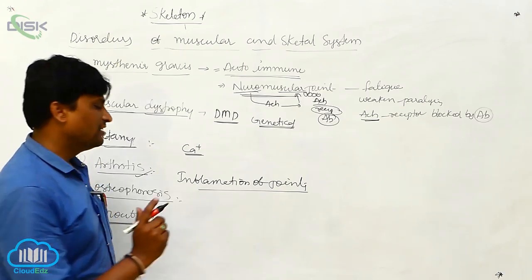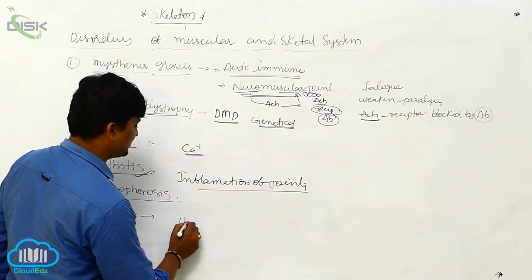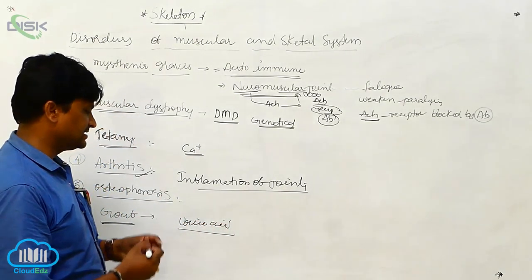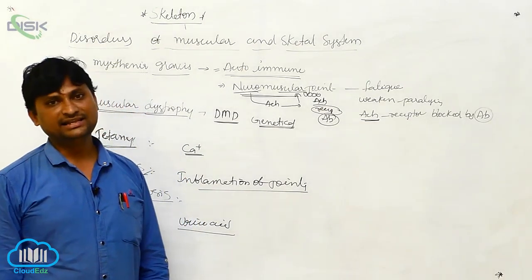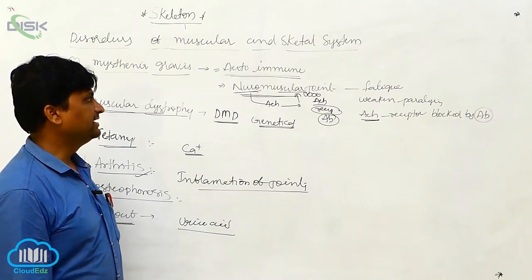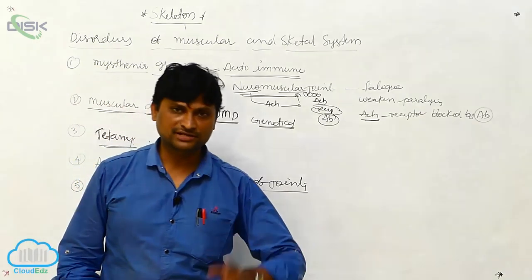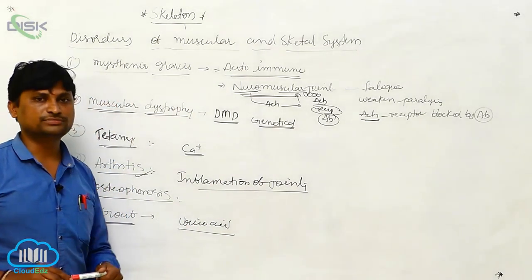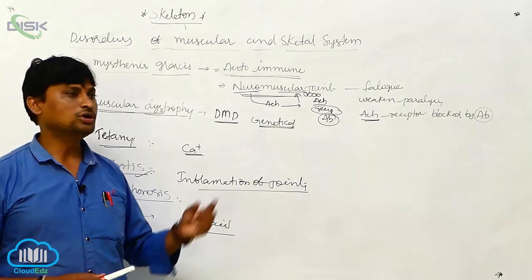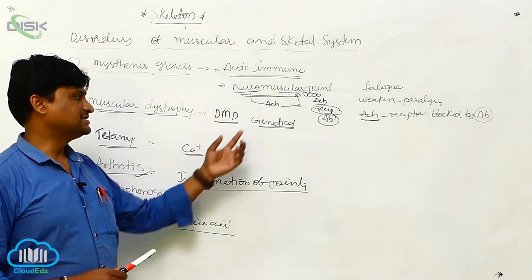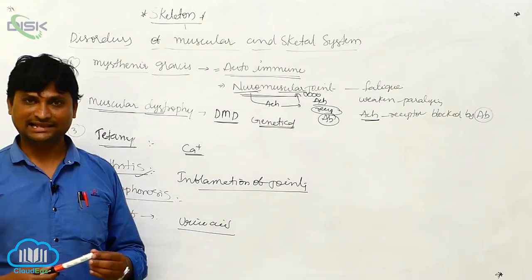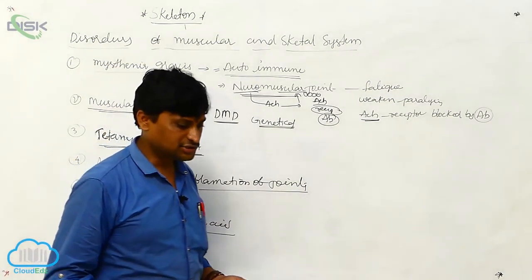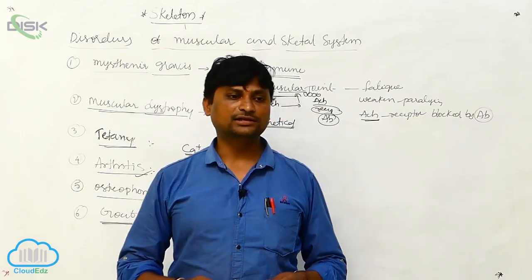The last disorder is gout disease, which involves accumulation and deposition of uric acid in the joints, leading to gout. To summarize, the disorders associated with the muscular and skeletal system are: myasthenia gravis, muscular dystrophy (including Duchenne muscular dystrophy, a genetic disorder), tetany (involving calcium and parathormone), arthritis, osteoporosis, and gout disease.